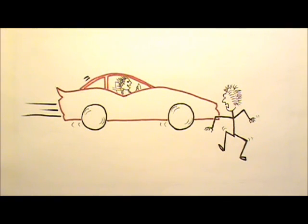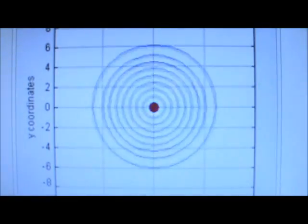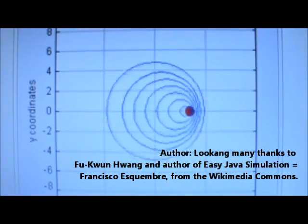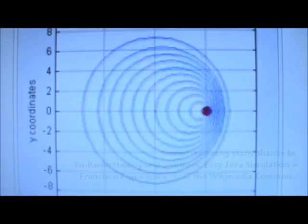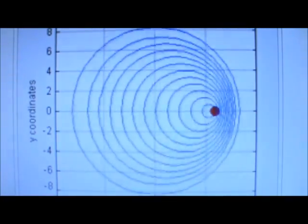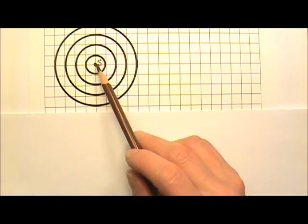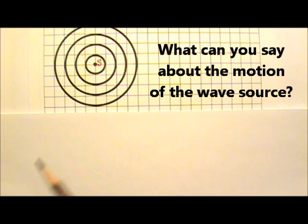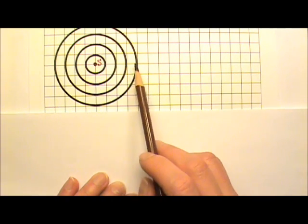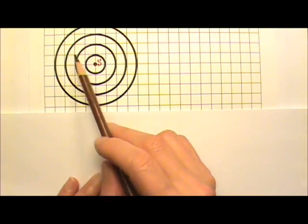Doppler effect happens to different kinds of waves, but we probably hear about it mostly for sound and light waves. Now let's take a look at how the Doppler effect happens. This diagram shows the wave fronts produced by a stationary wave source. The source is stationary, so the wavelength of the wave is the same in all directions around the source.